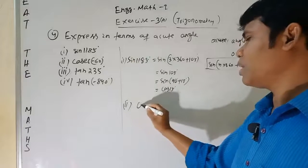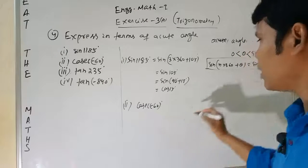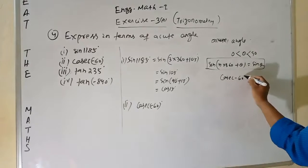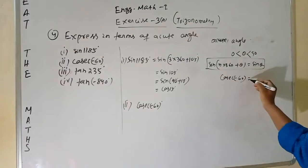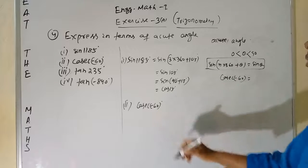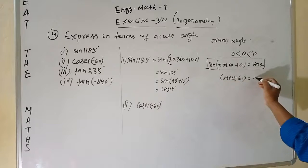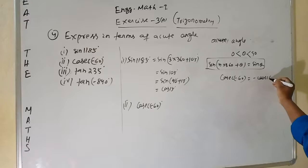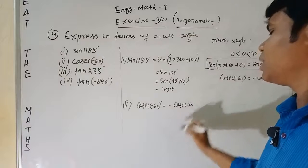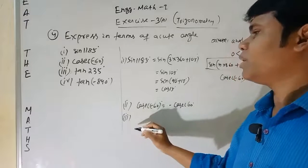The second one is given: cosec(−60°). You see −60° lies in the 4th quadrant. In the 4th quadrant, cosec is negative. Therefore, cosec(−60°) = −cosec(60°).